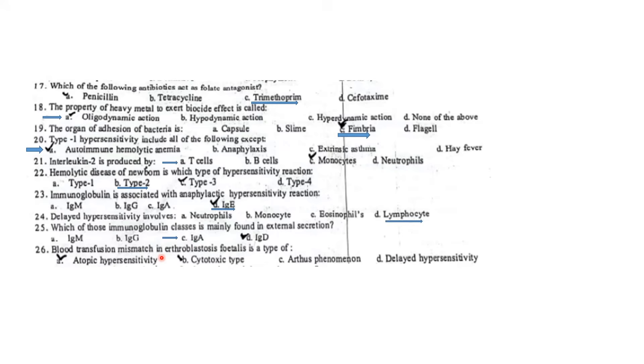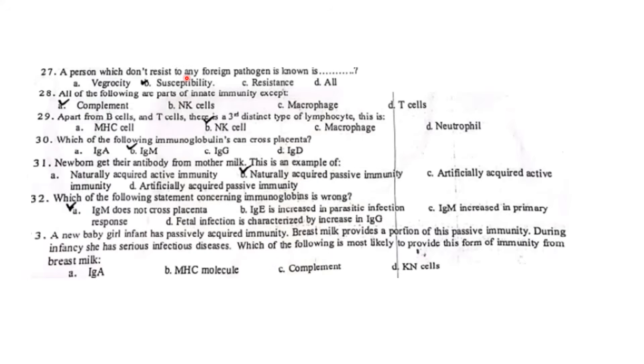Blood transfusion mismatch and erythroblastosis fetalis is the cytotoxic type. A person which doesn't resist any foreign pathogen is known as susceptibility. All of the following are parts of inner immunity except: complement system, natural killer cells are inner immunity parts. T cells are acquired immunity parts.